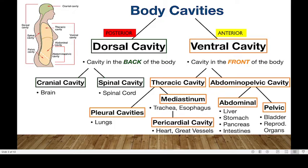To understand this, we can start with the major anatomical regions. The body cavities are divided into two: we have the posterior side, which is the dorsal cavity, and the anterior side, which is the ventral cavity. So the dorsal cavity is a cavity in the back of the body, as compared to the ventral cavity, which is in front of the body.